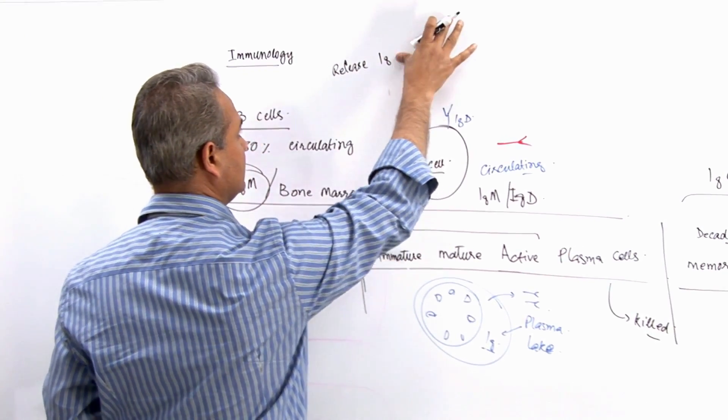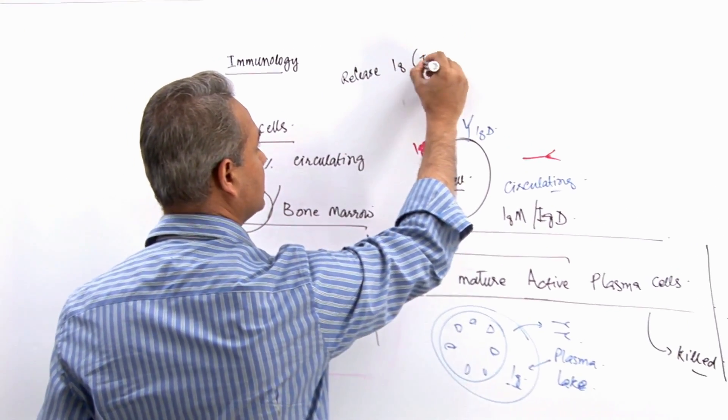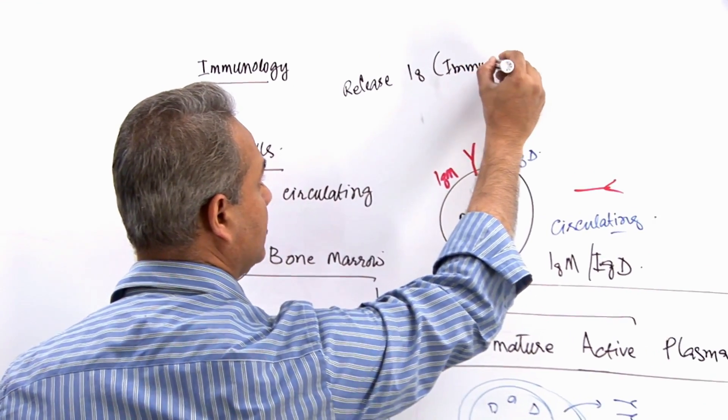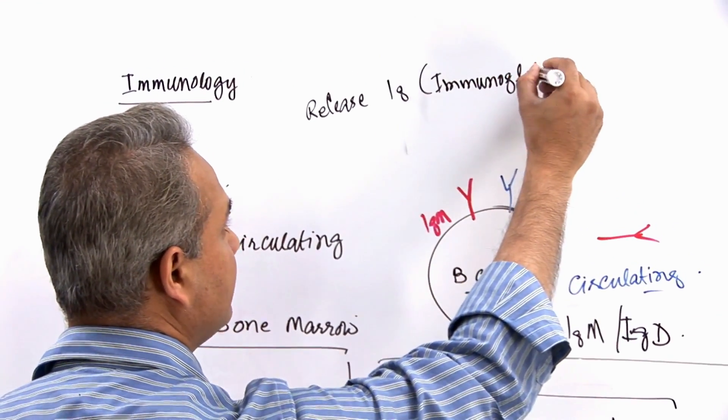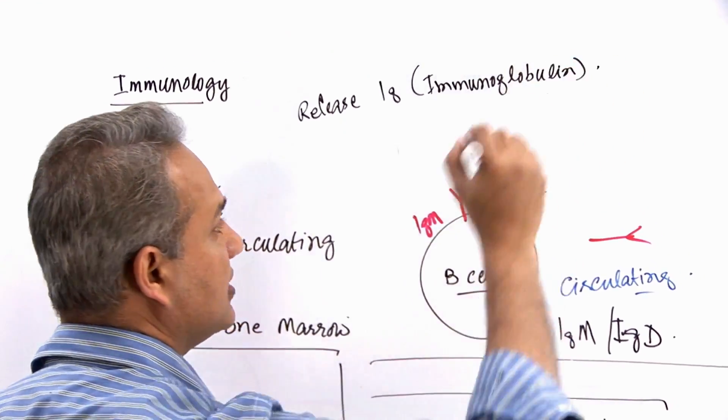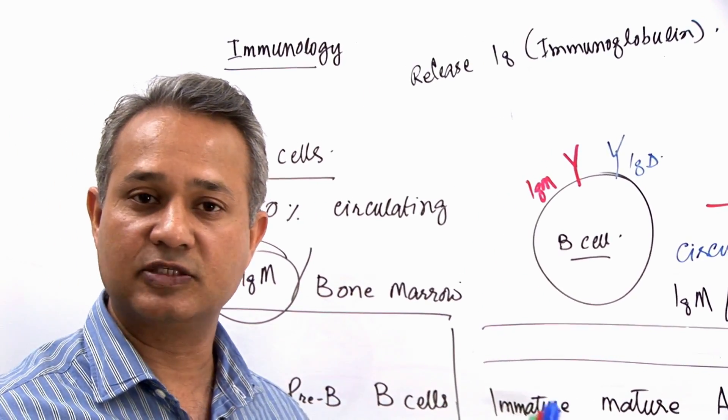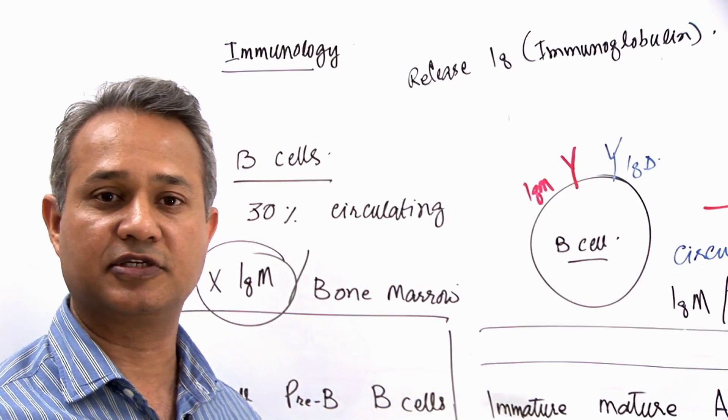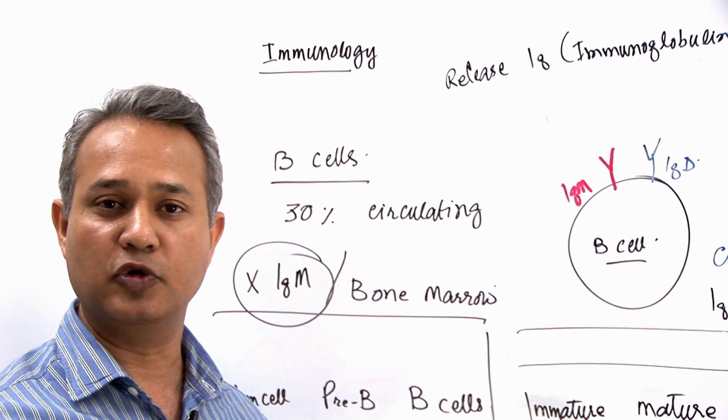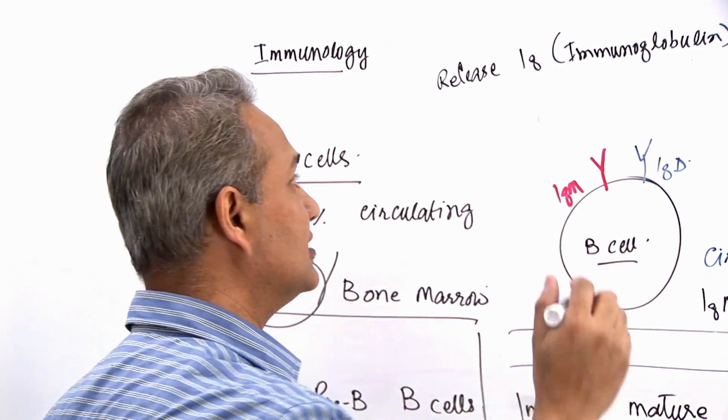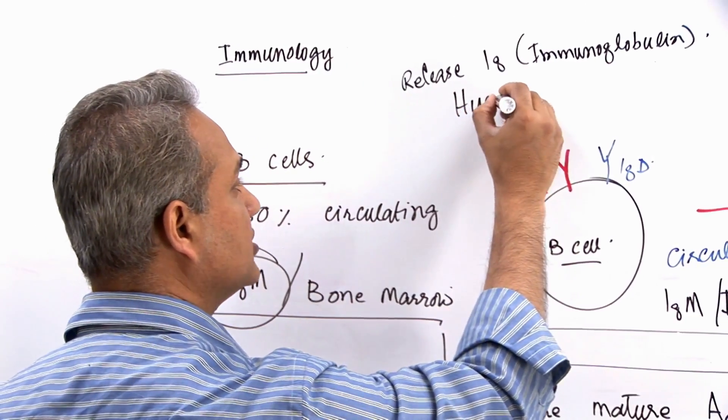To make and release immunoglobulins, IgGs. What is that function? That function is the fighting, as part of the immune system, as a component of the immune system. This is the acquired arm of immune system function, the humoral response.